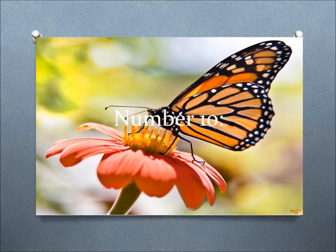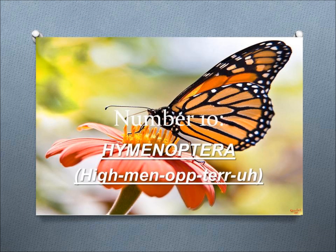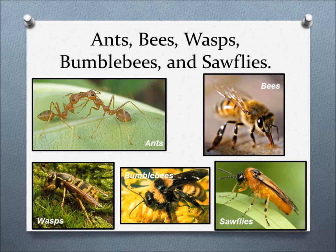Number 10, Hymenoptera. This order includes ants, bees, wasps, bumblebees, and sawflies, and these insects have a great economic significance, as they are pollinators, agents of biological control of other insects, and household and forest pests.